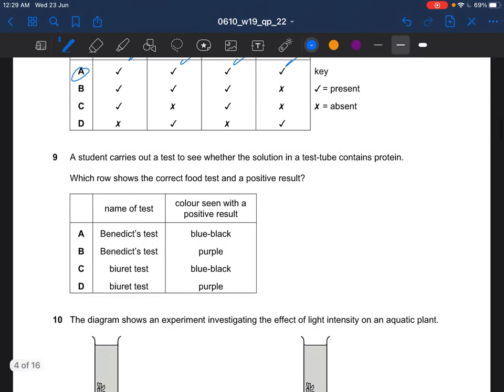Next question, a student carries out a test to see whether the solution in a test tube contains protein. Which row shows the correct food test and a positive result? The test for protein is the biuret test. So the answer will be B. Benedict test is to test for reducing sugar. A positive test for biuret test would be purple. For Benedict test, a positive test would be from blue to either yellow or red or brown. So the answer for question 9 would be B.